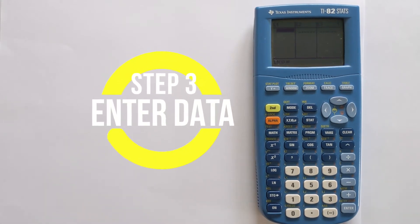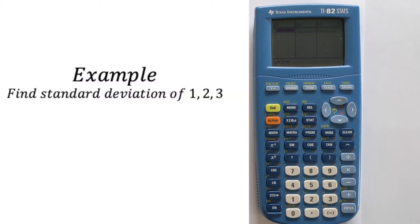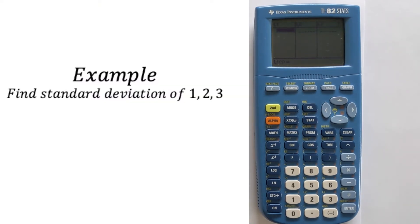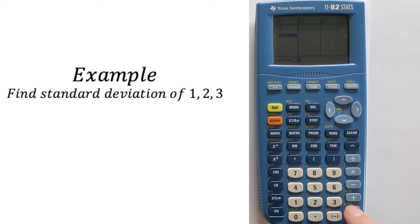We then want to enter our data. For this example, we're just going to do a really simple one. We're going to find the mean and standard deviation of 1, 2, 3. So we need to enter 1 equals, 2 equals, 3 equals. That is now all of the data entered.